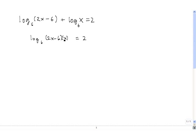Now log base 6 of 2x minus 6 times x, we can simplify by distributing this x. So we have 2x times x, which is 2x², and 6 times x, so minus 6x.